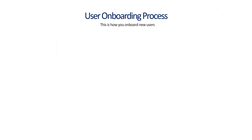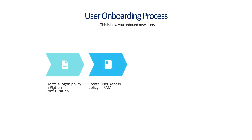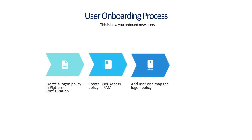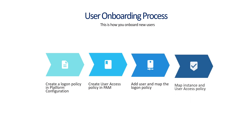This policy is then applied to individuals when pushing users into PAM. In the Sectona security platform, when users are newly onboarded, the process is: first, create a logon policy in Platform Configuration; then create a user access policy in PAM; add a user and map the logon policy to the user; then map the instance and user access policy. That is the exact process that one must follow.